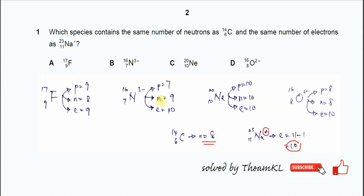So now we need to compare all the species here, A to D, with these two numbers. N equals 8 and E equals 10.